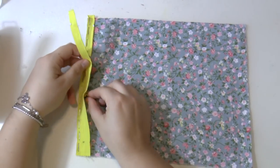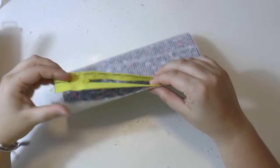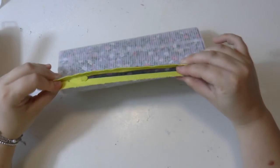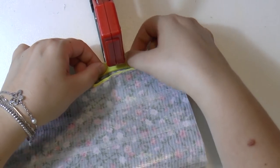Once you've stapled one side, then open the zipper completely and fold the fabric. You want your fabric to have the duct tape side facing up. And then you want to staple the other side.